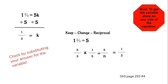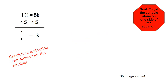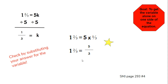We have to check by substituting our answer for the variable. Wherever K is, we put 1 third: 1 and 2 thirds = 5 times 1 third. 5 times 1 third is 5 thirds, and we know that 5 thirds equals 1 and 2 thirds. We are correct.